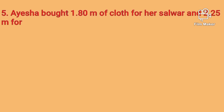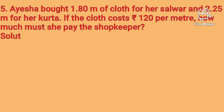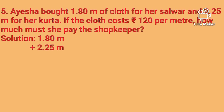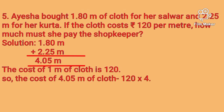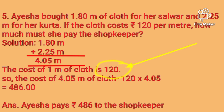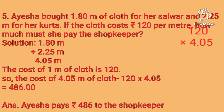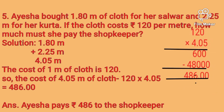Question number 5: Aisha brought 1.80 meter of cloth for her salwar and 2.25 meter for her kurta. The cost is rupees 120 per meter. How much must she pay the shopkeeper? We add both: 1.80 plus 2.25 equals 4.05 meter. Then multiply by 120 rupees: 120 times 4.05 equals 486. So Aisha pays rupees 486 to the shopkeeper.